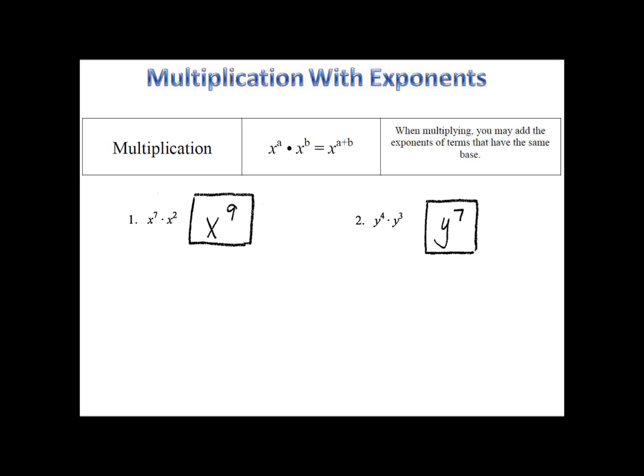y to the fourth times y to the third. 4 plus 3 is 7. That gives us y to the seventh.